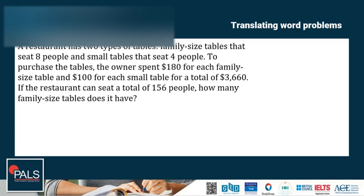Considering the cost, each family-sized table contributed $180, and each small table contributed $100 to the total. This gives us the equation 180F plus 100S is equal to $3,660. F is family-sized, S is small-sized. The same idea works for the number of people. Each family-sized table sits 8 and each small table sits 4, so 8F plus 4S is equal to 156, the total number of people.